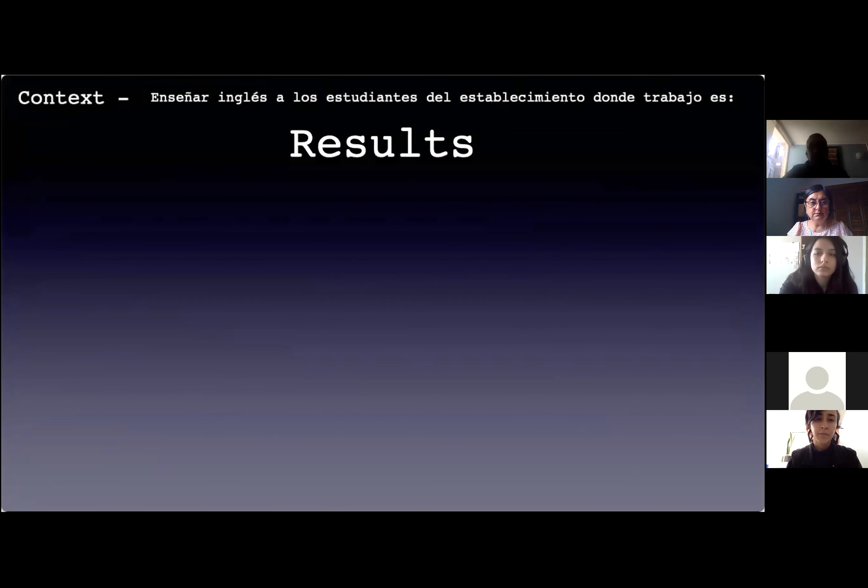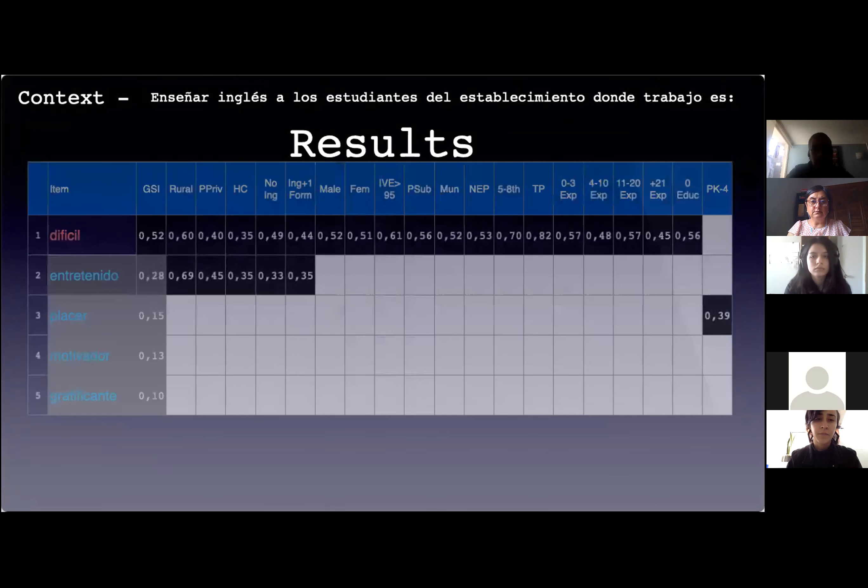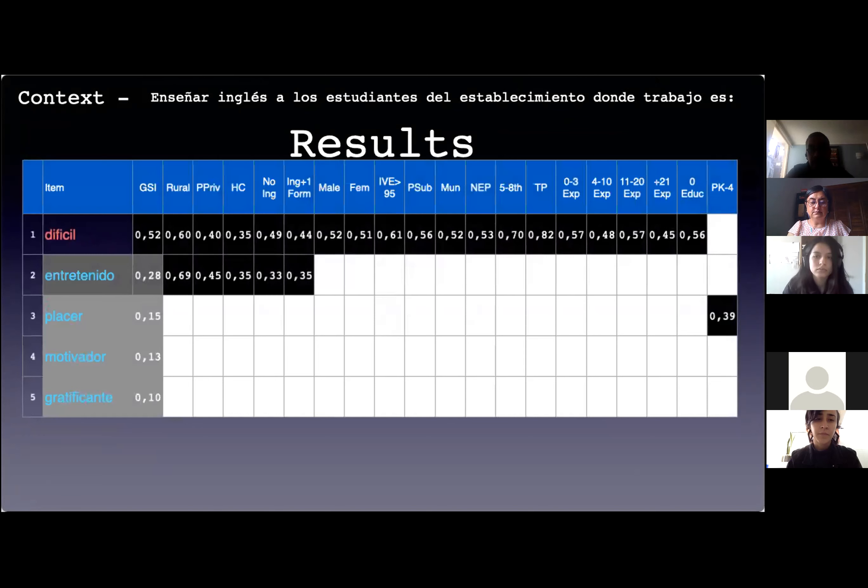When we see the social representation of learning English from a contextual perspective—'Enseñar inglés a los estudiantes del establecimiento donde trabajo es'—DIFÍCIL appears as distinctly strong an item for the whole sample, as well as all the subgroups except for teachers of young learners.